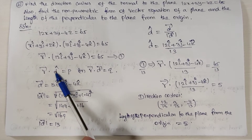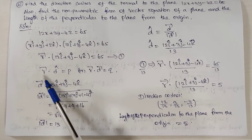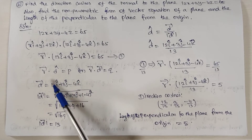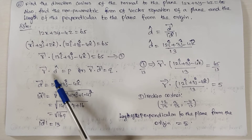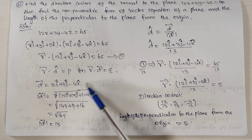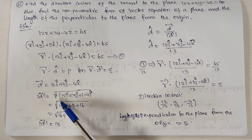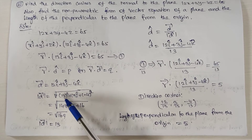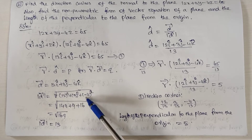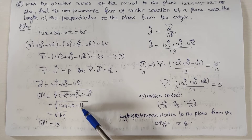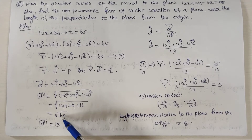Now we have to find the modulus of d⃗. The square root of 12 squared, which is 144, plus 3 squared, which is 9, plus minus 4 squared, which is 16. So square root of 144 plus 9 plus 16 equals root of 169, which is equal to 13.